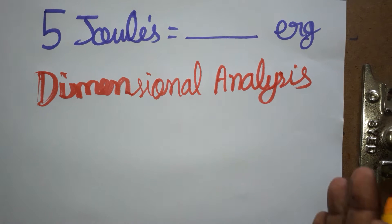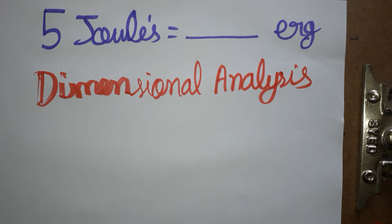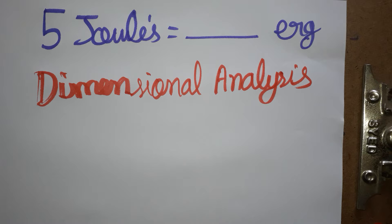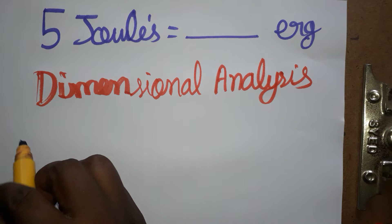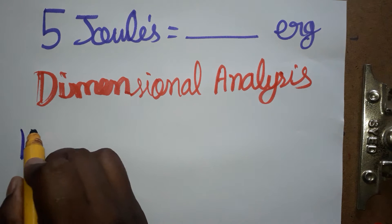Today we are going to learn: 5 joules is equal to how many ergs. We are going to use dimensional analysis technique to find it — not the direct technique, but the dimensional analysis concept. First, we will learn what is joules.